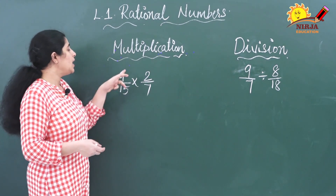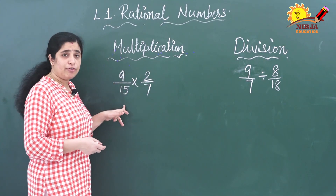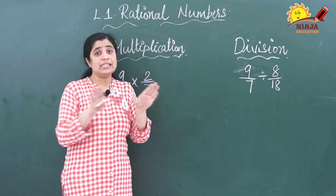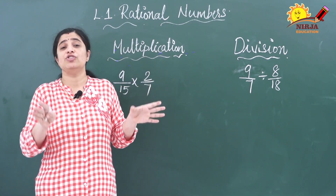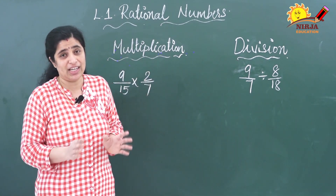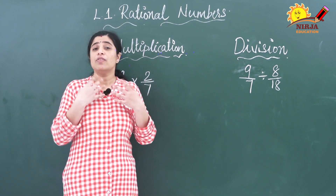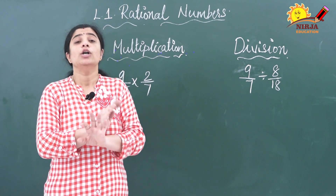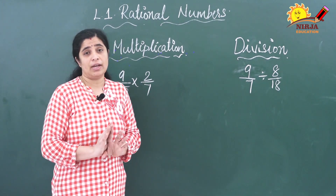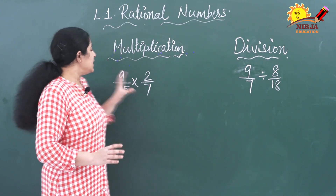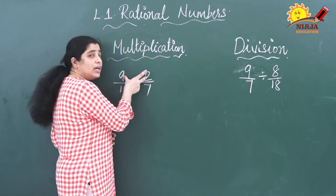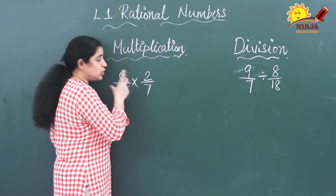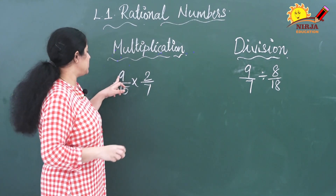Now we will discuss the multiplication and division of rational numbers. I have written one example here: 9 by 15 multiplied by 2 by 7. Multiplication and division is actually easy. In addition and subtraction we have to find the LCM, but here there is no need to find the LCM. You can directly multiply the numerator with the numerator and the denominator with the denominator.